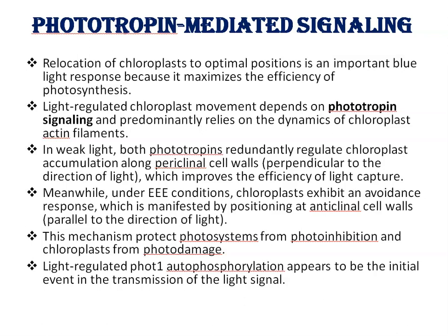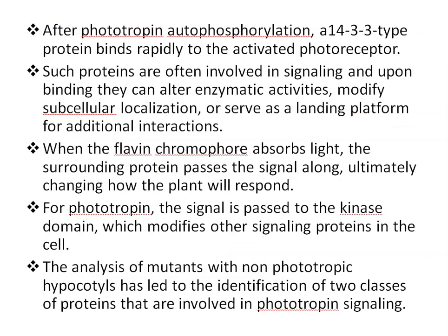This mechanism protects the photosystem from photoinhibition and chloroplasts from photodamage. Light-regulated phot-1 autophosphorylation appears to be the initial event in the transmission of the light signal. After phototropin autophosphorylation, a 14-3-3 type protein binds rapidly to the activated photoreceptor. Such 14-3-3 type proteins are often involved in signaling, and upon binding they can alter enzymatic activities, modify the subcellular localization, or serve as a landing platform for additional interactions.